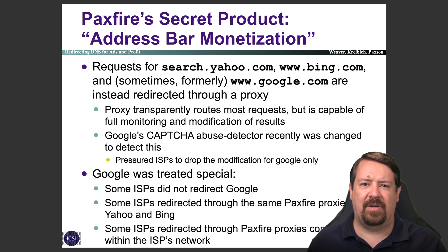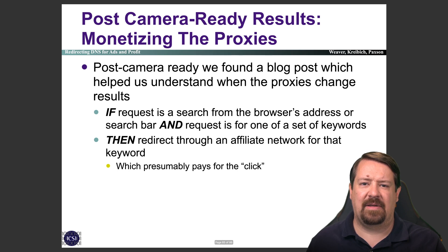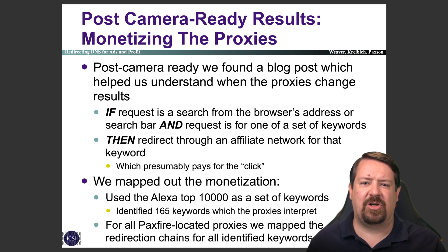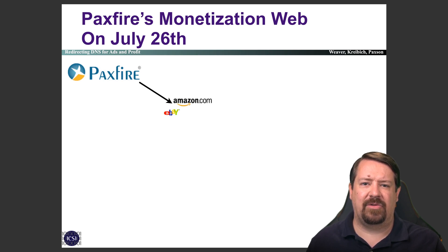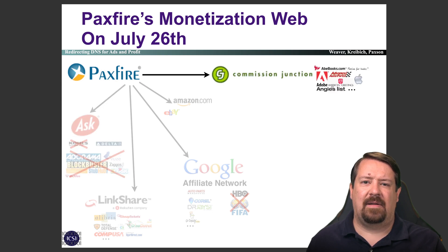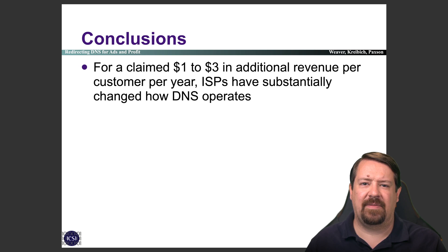The results observed at the time of this work are not repeatable today. At the time, searches from the browser were being analyzed for particular keywords, and if the third-party monetization service had clients interested in advertising on one of those keywords, the search requests would be redirected instead of being sent directly to the intended search engine. The researchers investigated this with 10,000 keywords and mapped out redirection chains — from the Paxfire redirection server to Amazon and eBay marketing, Linkshare affiliates, the Google affiliate network, Ask.com affiliates, Commission Junction affiliates, and DoubleClick, which had been acquired by Google. Interestingly, while ISPs claimed in shareholder disclosures that this generated only one to three dollars in additional revenue per customer per year, they were willing to fundamentally change how DNS operates and introduce significant privacy concerns.